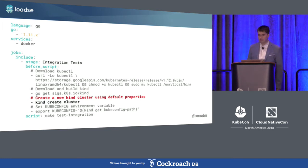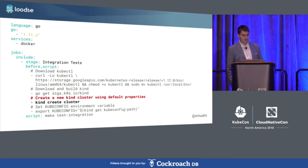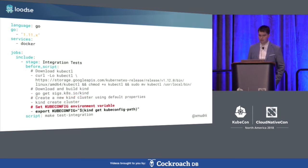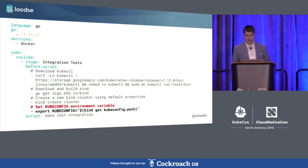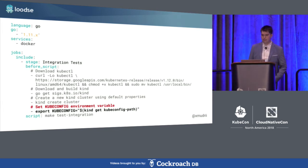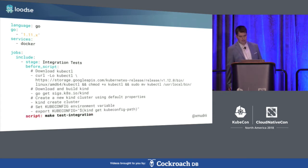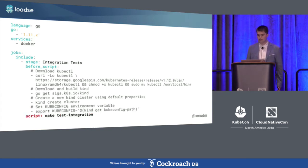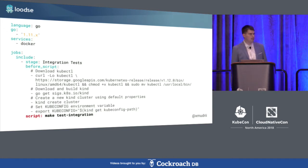Then we create a new cluster using the KIND create cluster command. This command takes a few minutes to set up everything. After it is done, we export the kubeconfig environment variable and our cluster is ready to be used — kubectl can now interact with our cluster. The last thing we have to do is run the integration tests; you can run whatever script you want here, for example a make command.